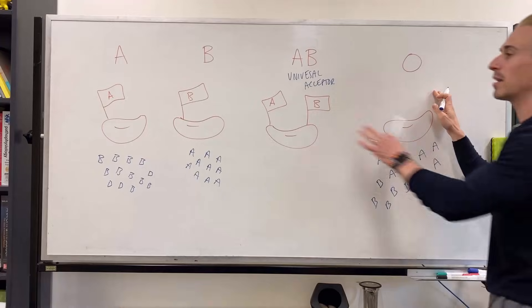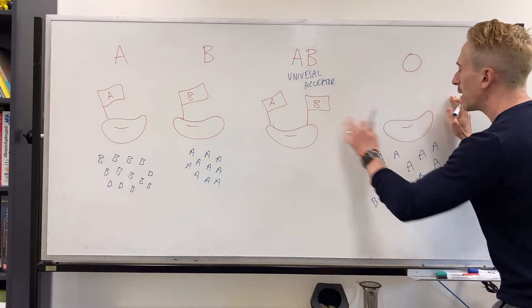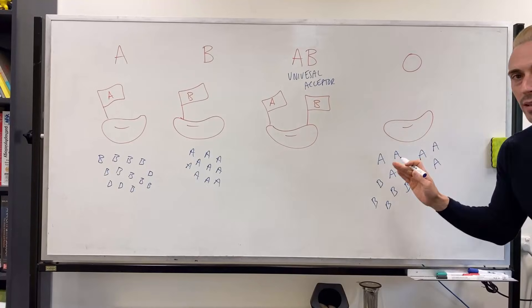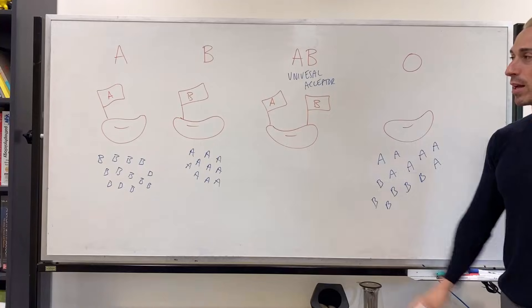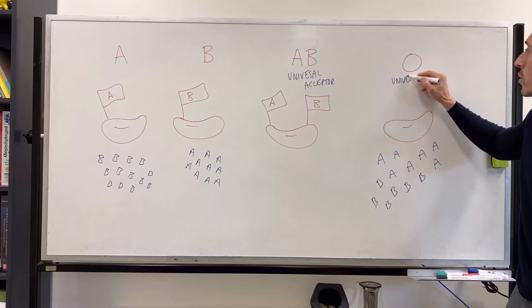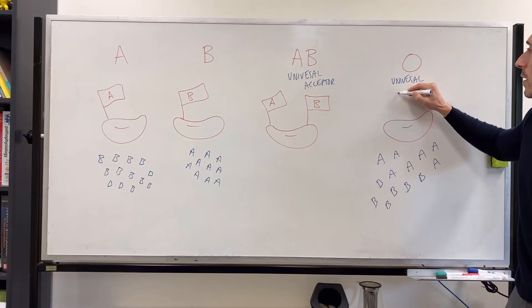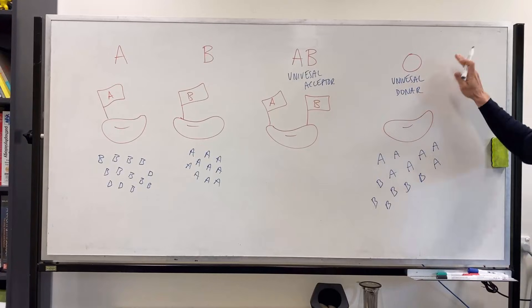Now O, O can't get A blood, O can't get B blood, O can't get AB blood. They can only get O blood. But everyone can take O blood. A could take it, B could take it, AB could take it. So O is known as the universal donor, which is why we always need more O blood.